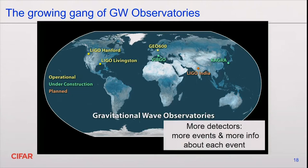LIGO is not the only gravitational wave observatory in existence. More are being commissioned in Europe, in India, and in Japan. With this bigger set of instruments, we will be seeing more events and will learn more information about each event. Most importantly, we will be able to pinpoint much more accurately out of which direction in the sky a certain gravitational wave is coming, so then we can point normal electromagnetic telescopes and look in the same region of the sky.